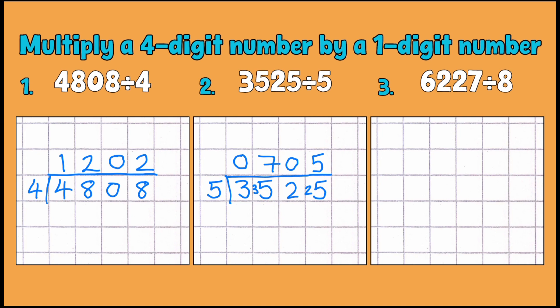Now then, our final example. We're going to do our bus stop again—6,227 divided by 8, split into eight equal pieces. So we start again: how many eights can I fit into 6? Well, I can't fit any, so my 6 moves over to make 62. Then I think, well, how many eights can I fit into 62?